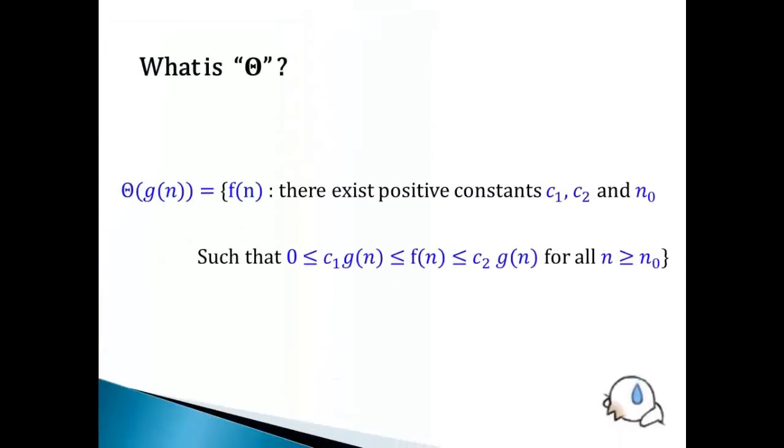What does the big theta notation inform? By mathematical definition, big theta of g(n) is the set which contains the function f(n) that there exists positive constants c1, c2, and n0.